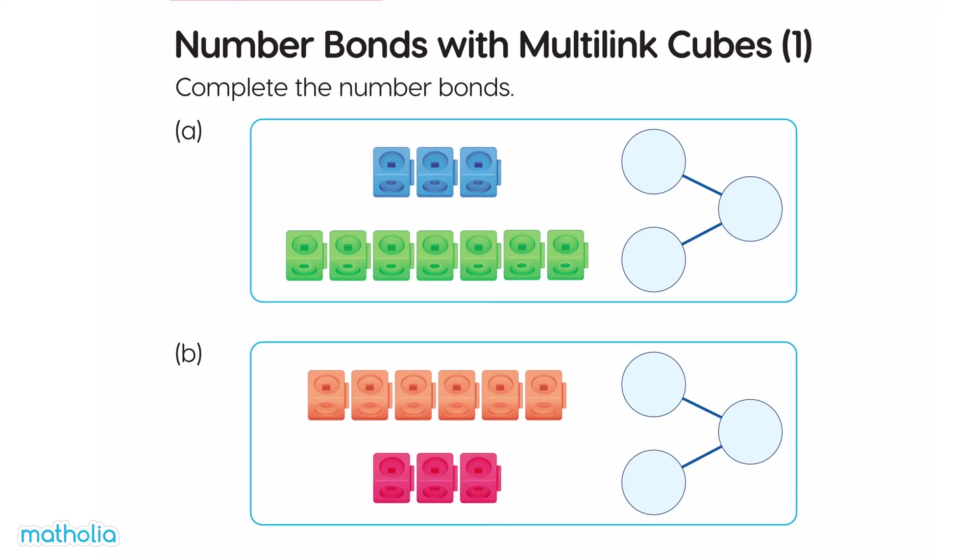How many blue cubes are there? There are three blue cubes. Three. How many green cubes are there? There are seven green cubes. Seven. How many cubes in all? Three and seven make ten.